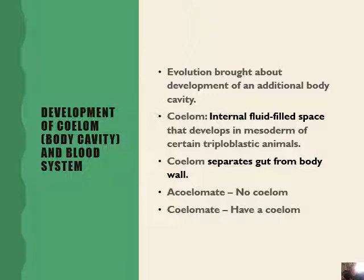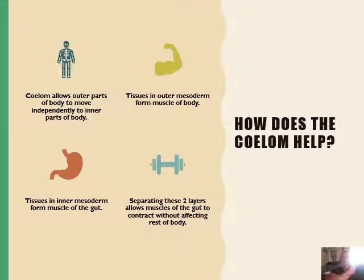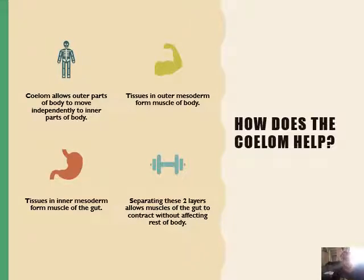You can either have a coelom or be acoelomate — 'a' indicating the opposite. So acoelomate means no coelom, whereas coelomate means you have a coelom. The coelom allows outer parts of the body to move independently of the inner parts of the body — that is important, you need to learn that off by heart. I will often ask what is the biological importance of a coelom. Tissues in the outer mesoderm form muscles of the body, and the tissues on the inner mesoderm form the muscles of the gut.